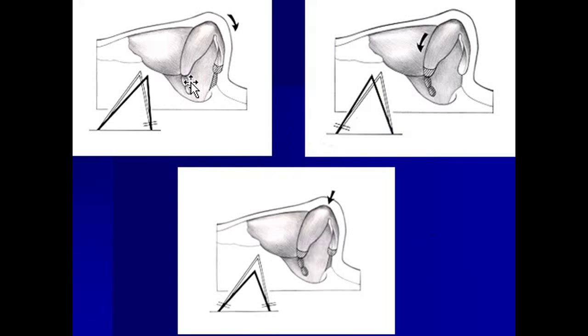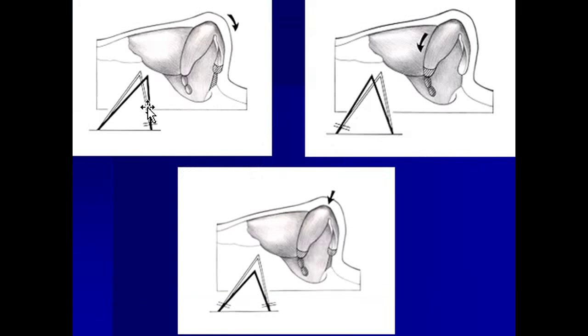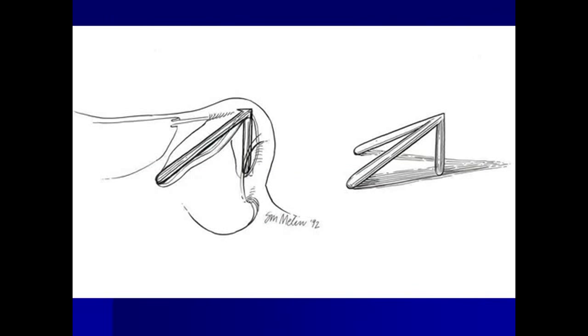If you look at the tip cartilages, there are two mirror image cartilages. This is just the near side, and there's a mirror image on the opposite side. The two inner limbs, or medial crura, form the inner limb of this tripod. And then each of the outer limbs, or lateral crura, form each of the outer limbs of the tripod.